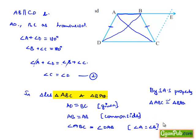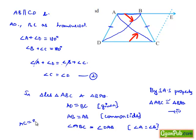Since the two triangles are congruent, their corresponding sides are equal. Therefore, AC is equal to BD. This is the fourth and final proof.